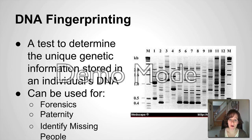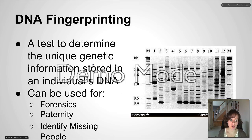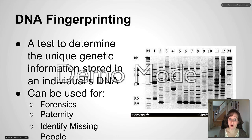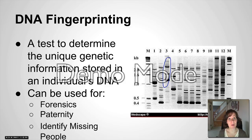To sum it all together, you've probably heard the term DNA fingerprinting on TV shows. This is a test to determine the unique information stored in somebody's DNA compared to somebody else's. It can be used for forensics — finding what DNA matches a crime scene suspect — for paternity testing, and to identify missing people. Those three steps we just went through — PCR, restriction enzyme, and gel electrophoresis — are the steps a forensic lab uses to find out whose DNA was left at the scene. Each person's DNA has a unique fingerprint or banding pattern different from somebody else's.